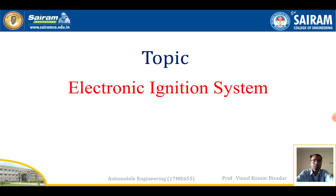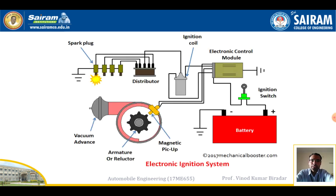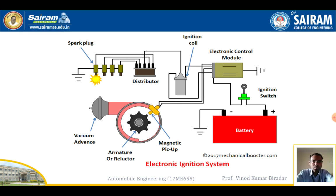In this chapter I will tell you about the working of the electronic ignition system. See, this is a complete circuit diagram of the electronic ignition system. In the battery system, we are getting power from the battery; in the magneto system, power comes from the magnet. Here, with the help of some electronics circuitry and a battery, we are also getting power.